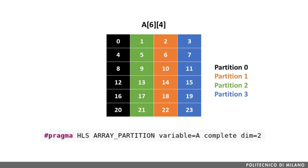As a last example, consider the case in which we completely partition the second dimension and do not partition the first. In this case, we obtain 4 partitions — one partition for each column. Notice that such partitions each contain 6 elements; hence they are still implemented using BRAM resources and not registers.